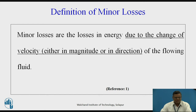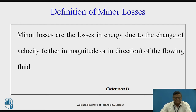Definition of minor loss. Minor losses are the losses which are occurring due to the change in the velocity. As we know, velocity can change in the form of magnitude or also in direction. Since it is a vector quantity, we can have only a change in direction in some cases, and in other cases we might have a change in magnitude also. So if the velocity is changing, the minor loss is going to occur.